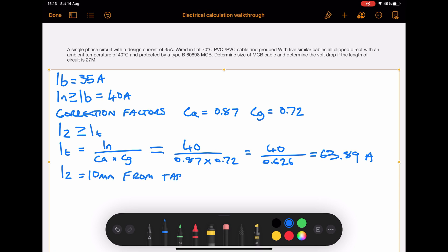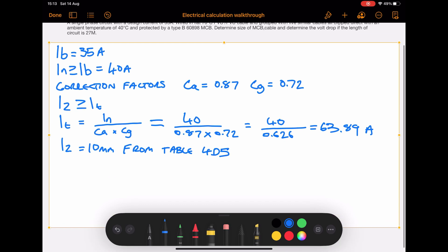If you look in appendix 3 in the regs book, you look at table 4D5 which is for twin and earth cable, you'll see that the IZ is 10 mil from table 4D5. You'll notice that the maximum current capacity for that cable is 64 amps, so we're right at the upper end of the limit there.